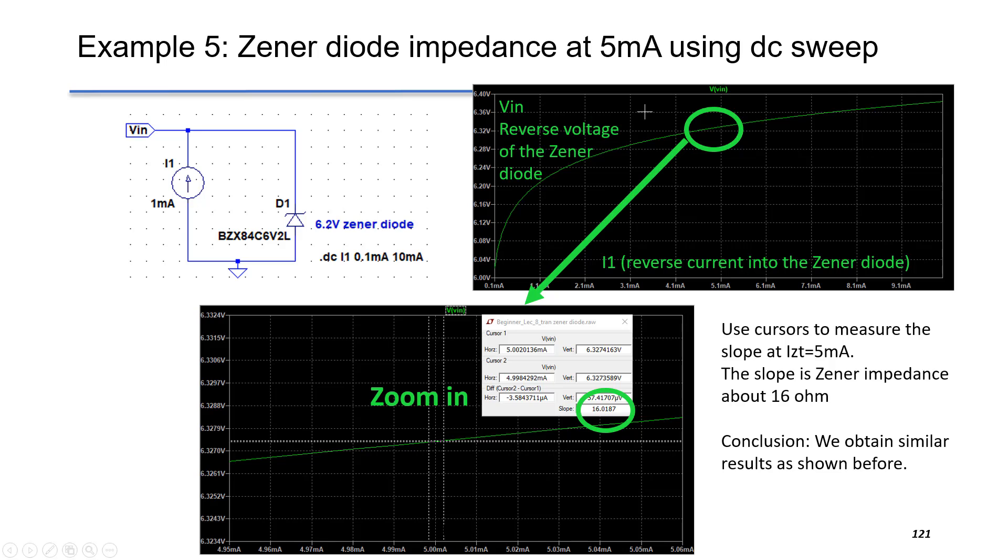If we look at the vicinity of I1 equals 5 mA, by using the cursors, we can find the slope is 16 ohm, which matches with the transfer function result. So this is the Zener impedance at 5 mA.